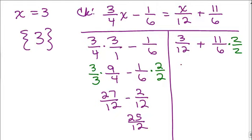If you reduce it, that's okay. You're just going to have to go back and multiply by 3 over 3 again. So we have 3 twelfths plus 22 twelfths. Now that you have a common denominator, you add the numerators, 25 twelfths, and then we compare sides.